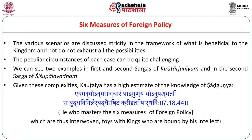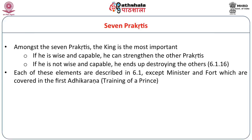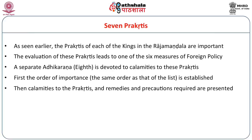We briefly touched on the seven Prakritis or seven constituent elements of the kingdom. They are: Swami (the king), Amatya (the minister), Janapada (the country), Durga (fort), Kosha (treasury), Danda (army), and Mitra (allies or friends). Their relative importance is in the order stated — king is most important, minister second, and so on. Each of these seven elements is described in great detail at various places in the book. Each Prakriti, along with the king, gets to play in the Rajamandala — there are 12 kings and six relevant Prakritis. The evaluation of these Prakritis leads to one of the six measures of foreign policy.